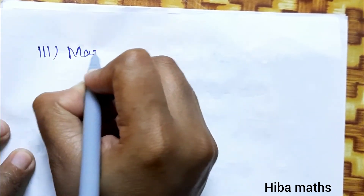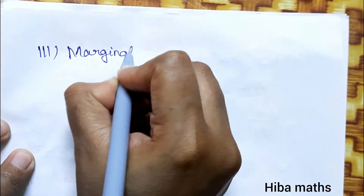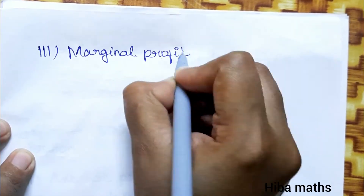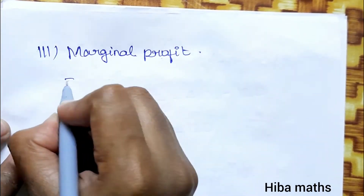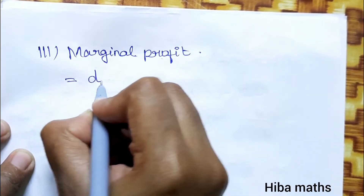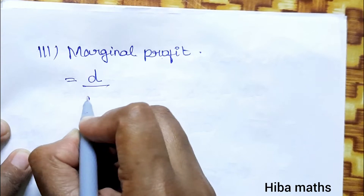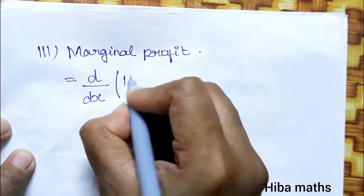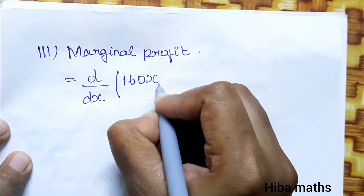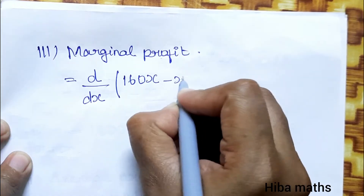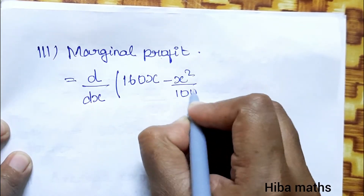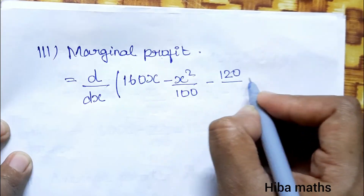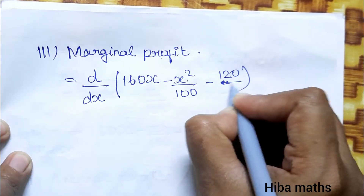Third, the marginal profit is found by differentiating the profit function with respect to x. Profit function: 160x - x²/100 - 120.